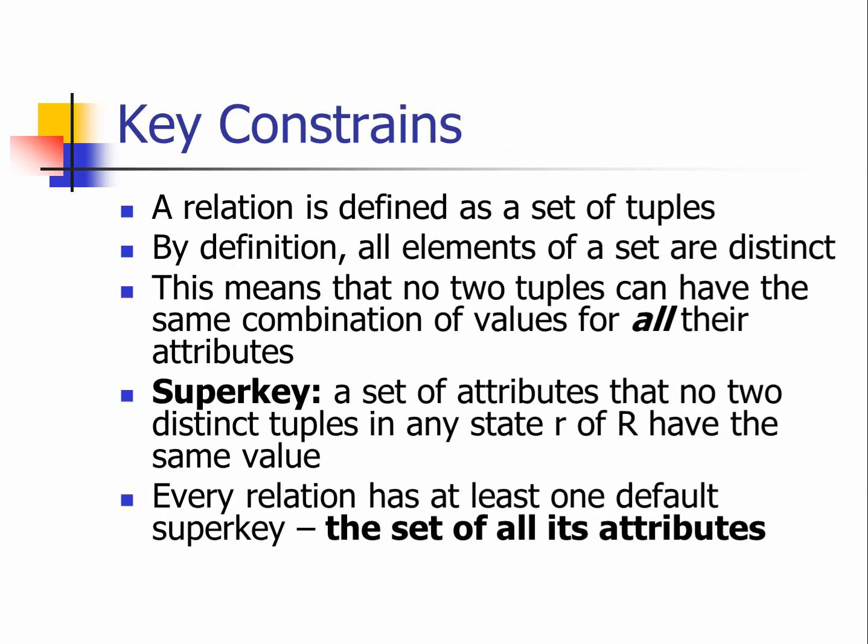A relation is defined as a set of tuples. In order to distinguish one tuple from another, we need to have a key constraint definition. In a database, by definition, all elements of a set are distinct — there cannot be duplications of two tuples. This means that no two tuples can have the same combination of values for all of the attributes. Before we look into the key concept, let's talk about the idea of the super key.